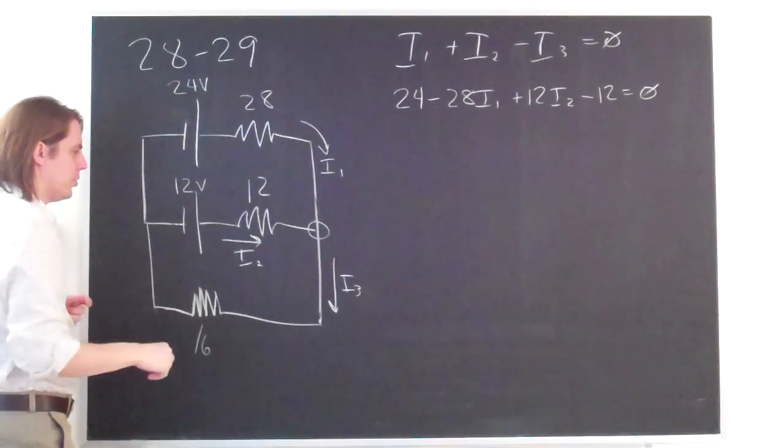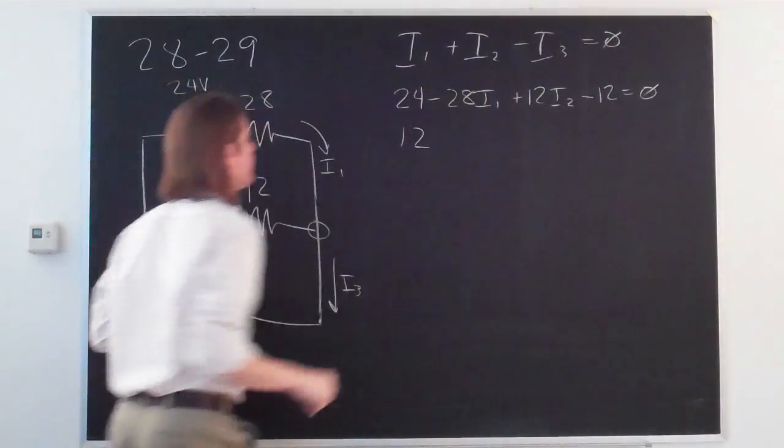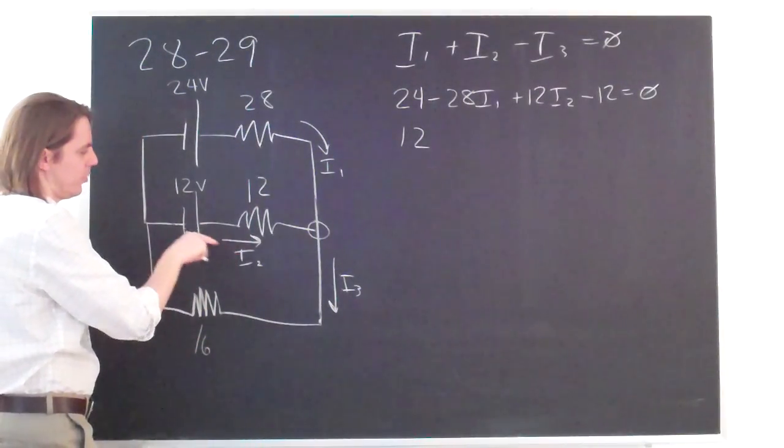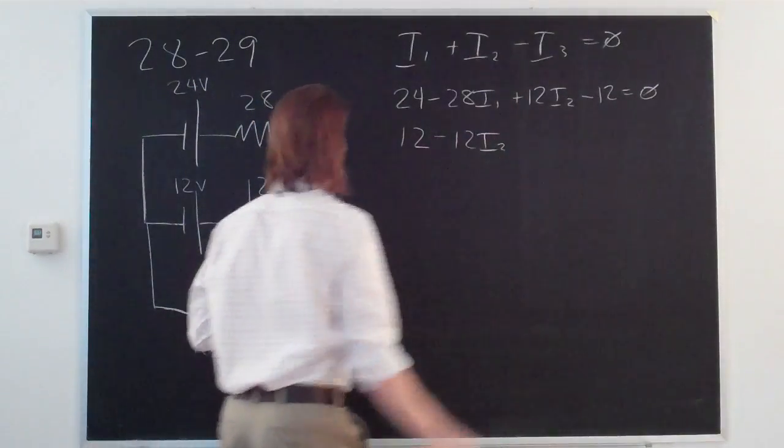So that was this loop here. And now let's do this loop also clockwise. We go with the battery 12. We go against the 12 ohm resistor with the current I2. So minus 12I2.